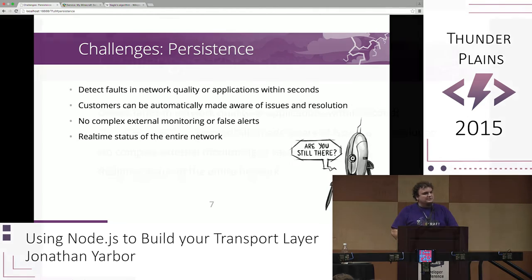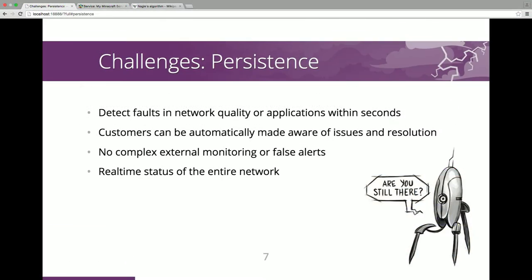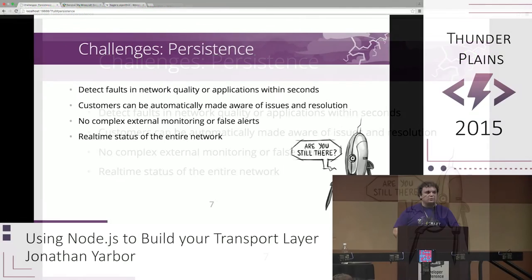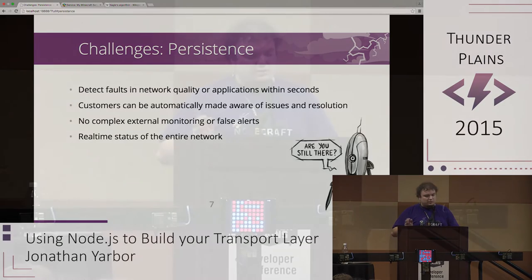We also have an issue with persistence because we want to make sure our servers are online and constantly available — we know when an issue comes along. With REST, you kind of have to wait until something breaks. It's a lazy request, and you say 'I can't make my request now' versus knowing exactly when it happens. That's what we want to build into our transport layer — we know when something goes wrong, when it happens, and we don't have to rely on some monitoring system.